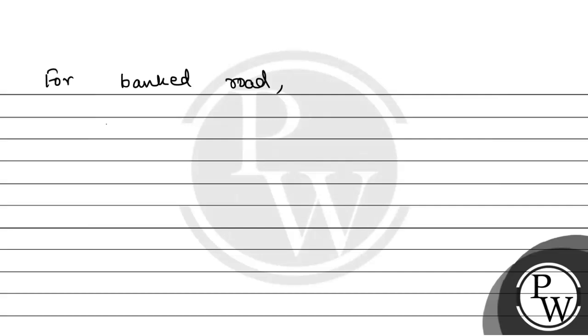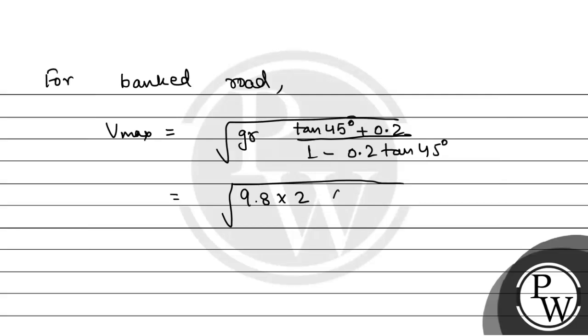Vmax equals the square root of g r times tan 45 plus mu, 0.2, divided by 1 minus mu, 0.2, times tan 45 degrees. Now tan 45 is 1, and g is 9.8, and r is 2.